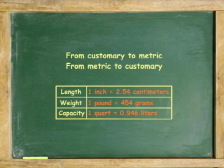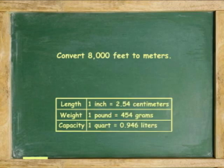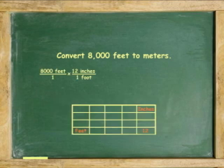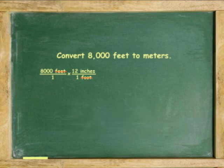For example, convert 8,000 feet to meters. Because the conversion table uses inches for length, convert 8,000 feet to inches first. 8,000 feet over 1 times 12 inches over 1. Cancel feet. Multiply 8,000 times 12 and you get 96,000 inches.